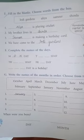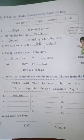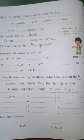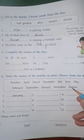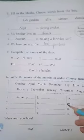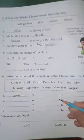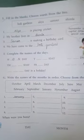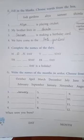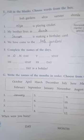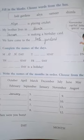Let's move on to exercise G. Write the names of the months in order — choose from the box. You have to arrange them in sequential manner. Let me recall the months in order: January, February, March, April, May, June, July, August, September, October, November, December.